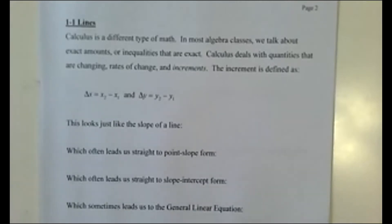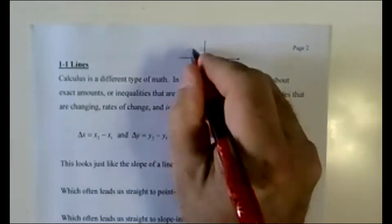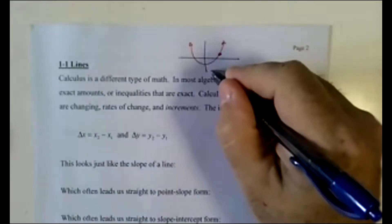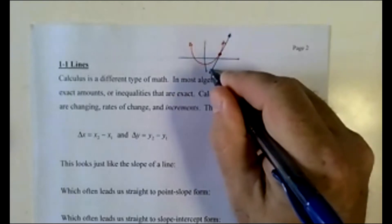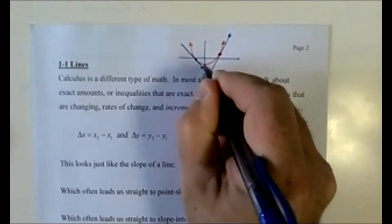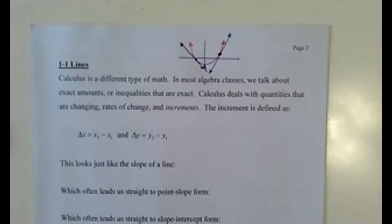Calculus is a different type of math where things are no longer exact. You've got straight lines that are simple to understand — but now we've got curves, and we draw straight lines on them. The best example is a coordinate plane with y equals x squared. At a point on that curve, we have a tangent line that just barely kisses it. We are constantly drawing straight lines on curves.